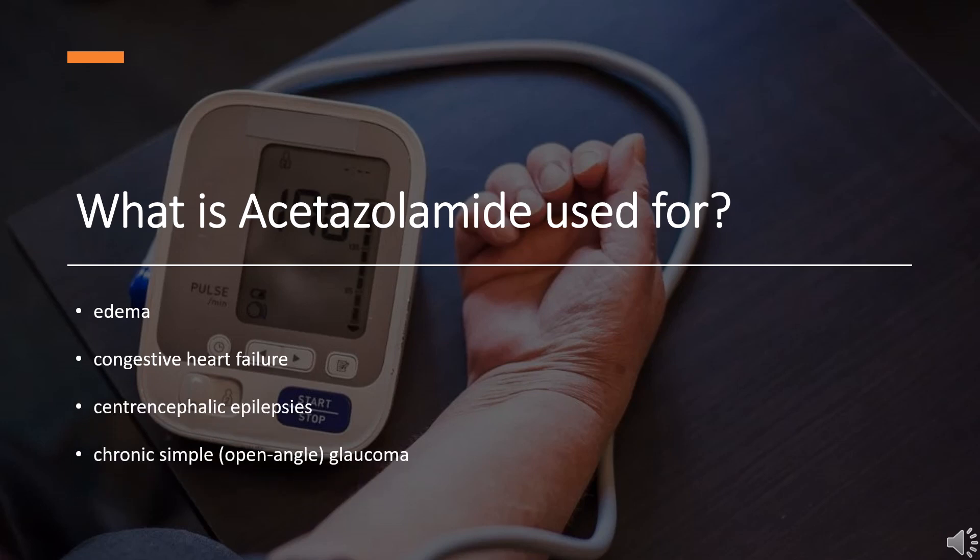What is acetazolamide used for? It is used for adjunctive treatment of edema due to congestive heart failure, drug-induced edema, centrencephalic epilepsies, and chronic simple open-angle glaucoma.